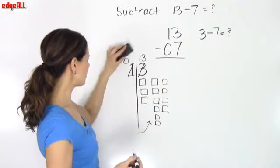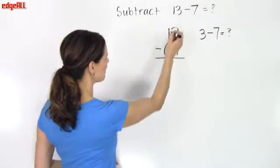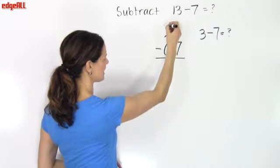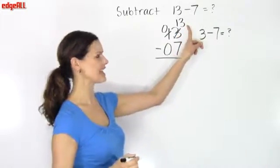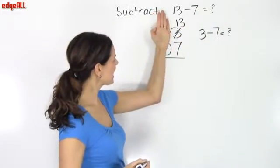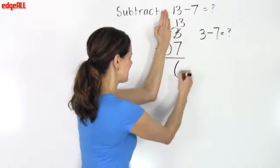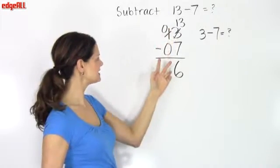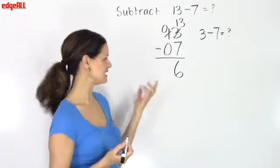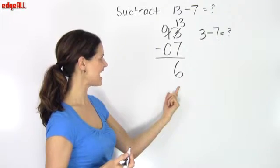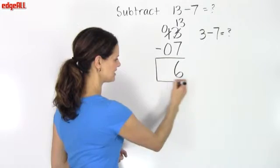So if I were to rewrite the problem here, I would borrow 1 from this tens place and make this a 0. And in my ones column, I'm going to make this 3 a 13. And so now, looking at my ones column, I know that 13 minus 7 is 6. And I put my answer here. And in the tens column, I've got 0 minus 0, which is just 0. And I could write it, but I don't need to. And so I can just leave my answer here as 6. So subtract 13 minus 7, and the answer is 6.